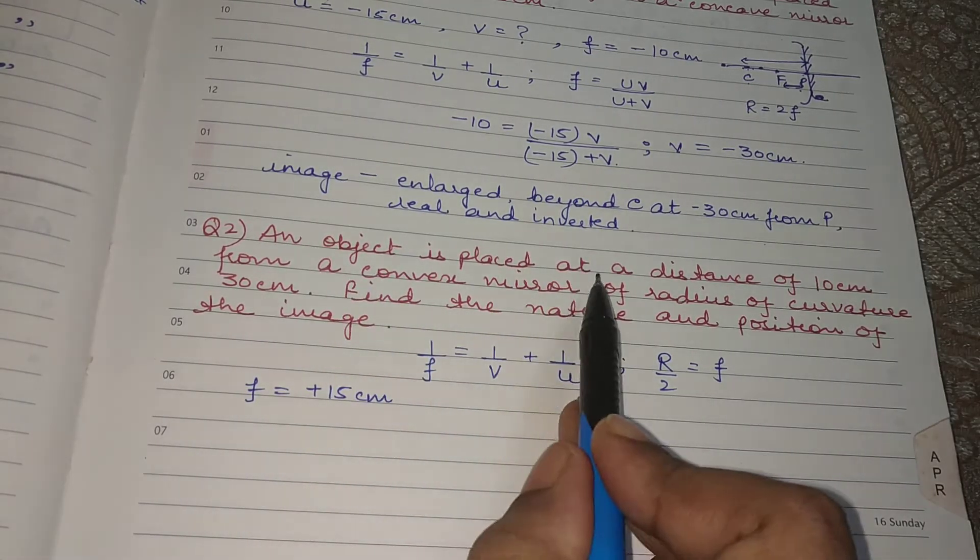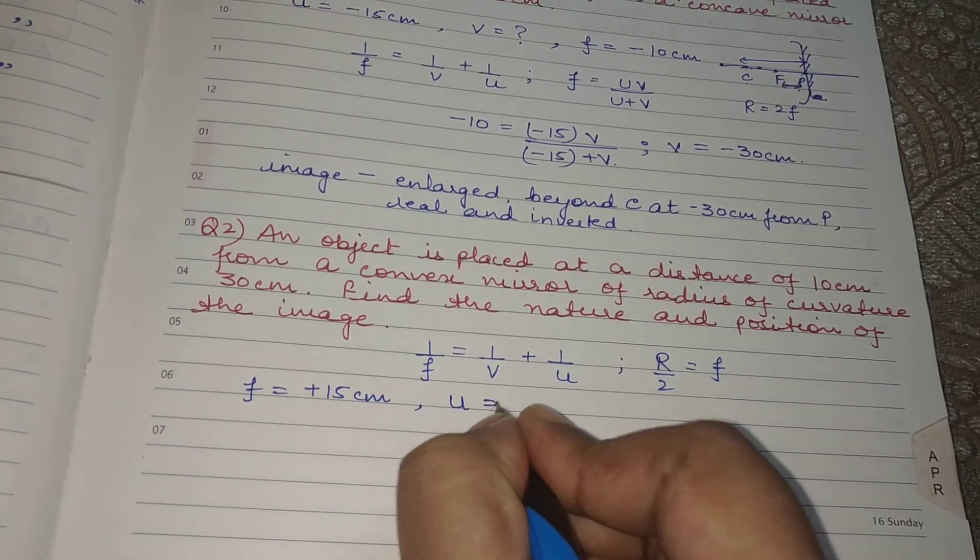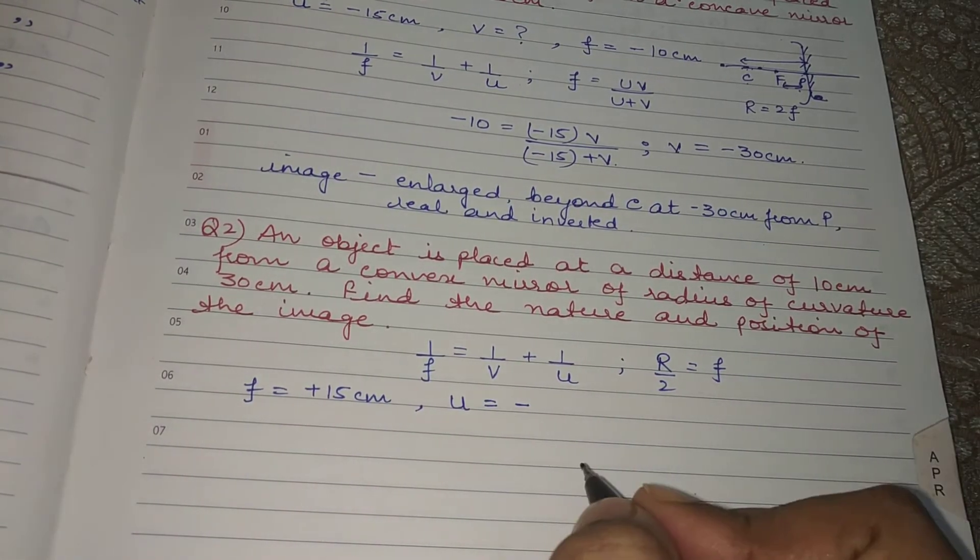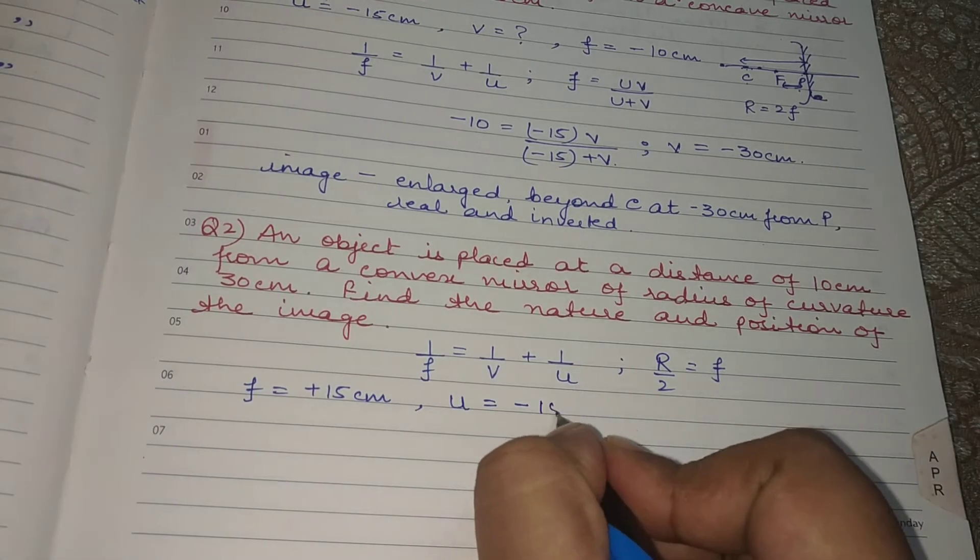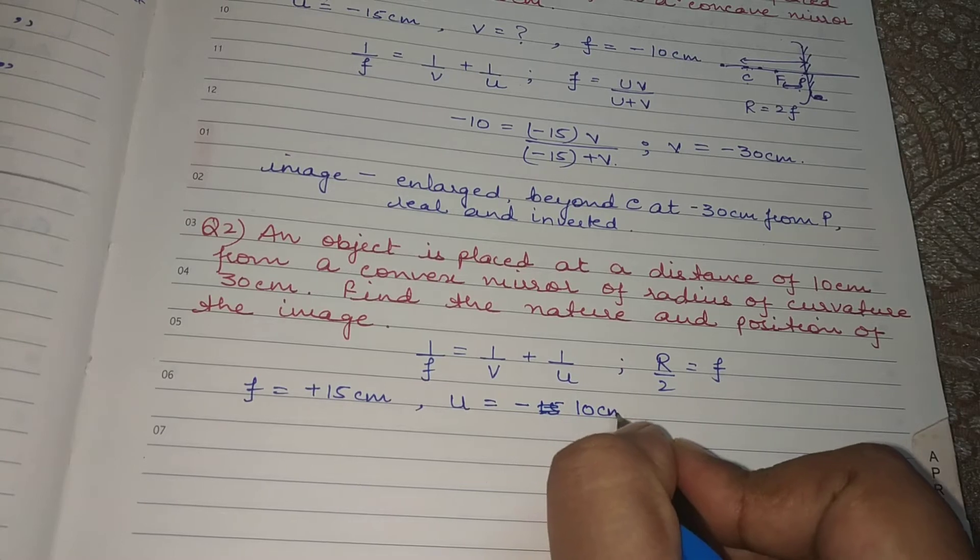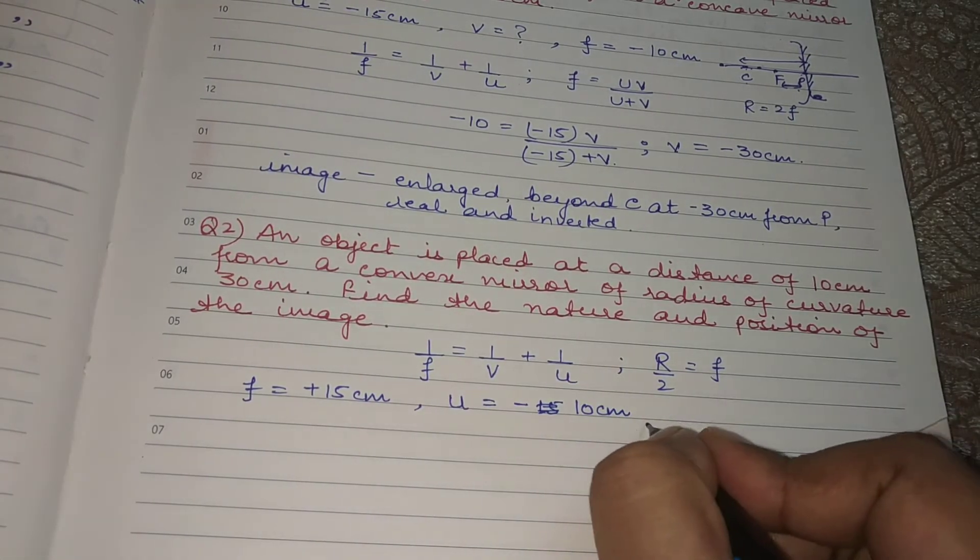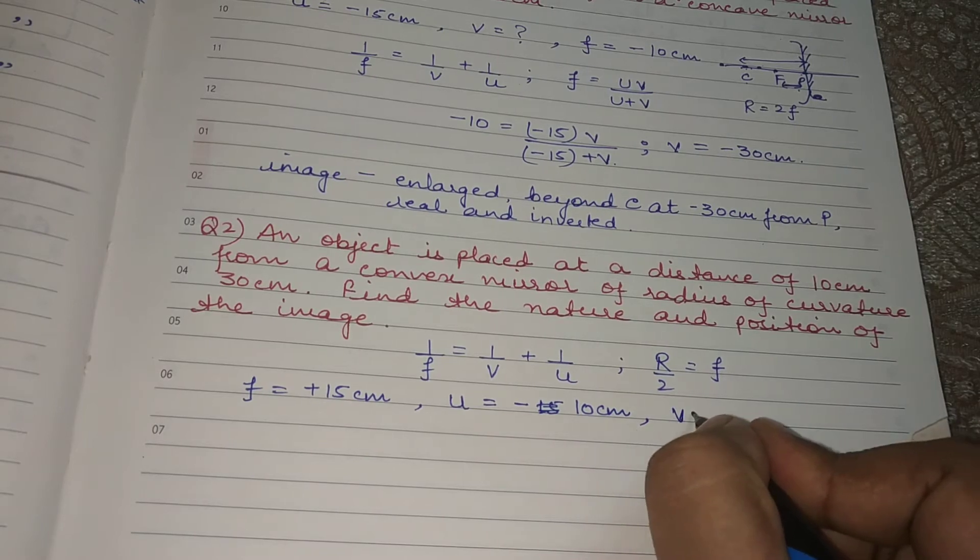The object distance is given which is 10 cm. Object is always kept on the left side of the pole. Therefore the object distance is minus 10 cm and you have to find the nature and position of the image.